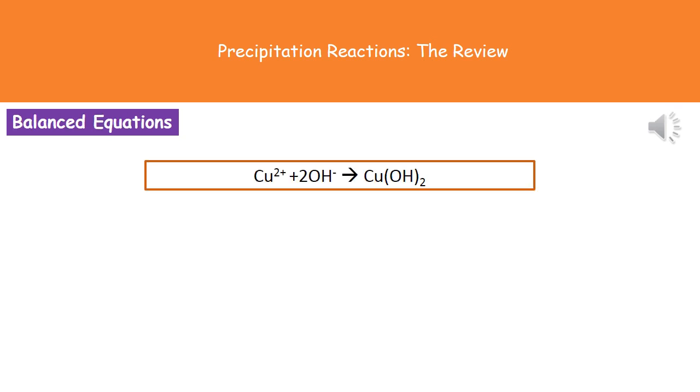You might be asked to write a balanced symbol equation for the reaction. I've given you the example of copper reacting with sodium hydroxide. The metal ion we've got is Cu2+, and that's going to react with two hydroxide ions, which are OH-. They then form Cu(OH)2.